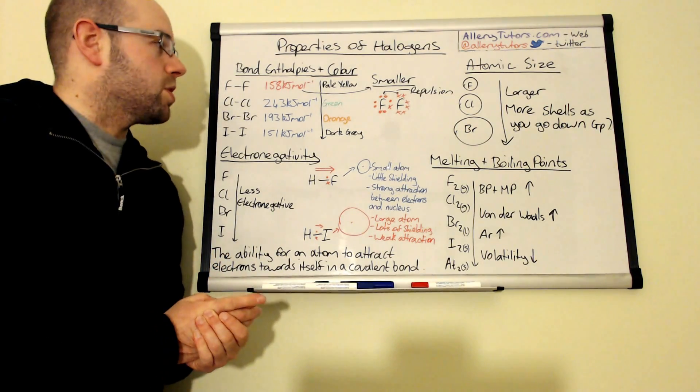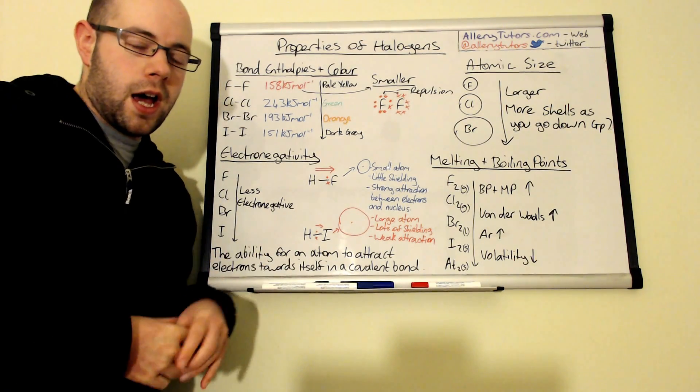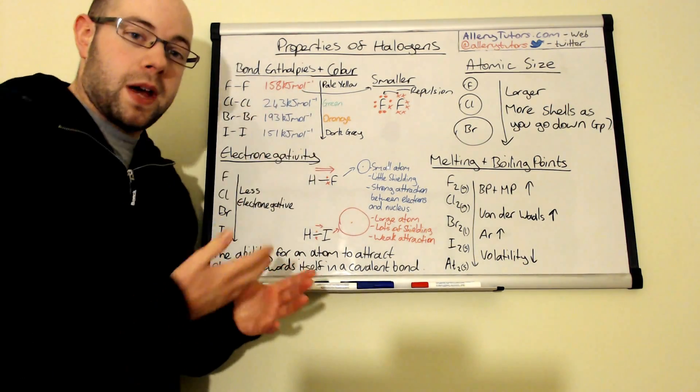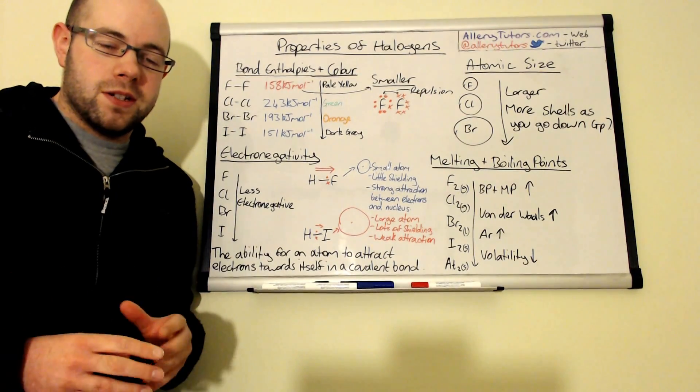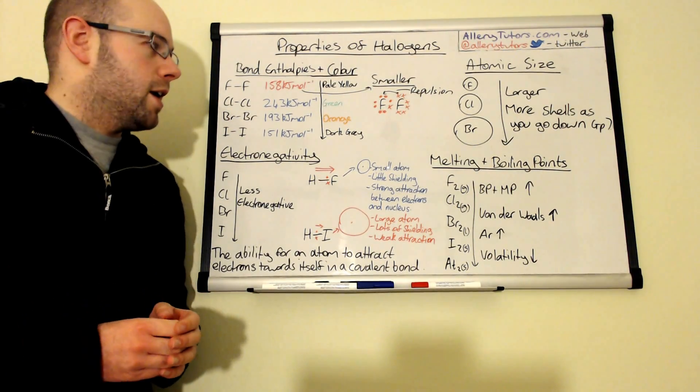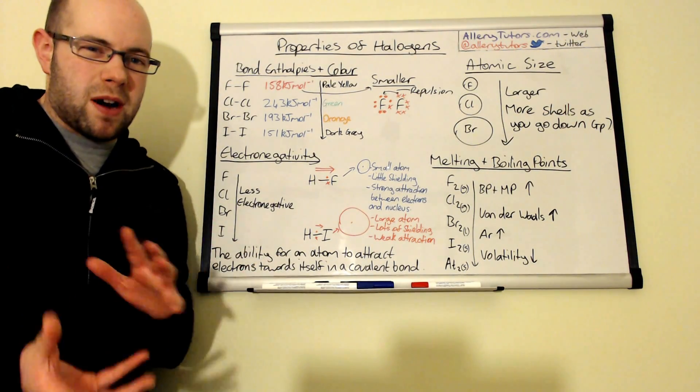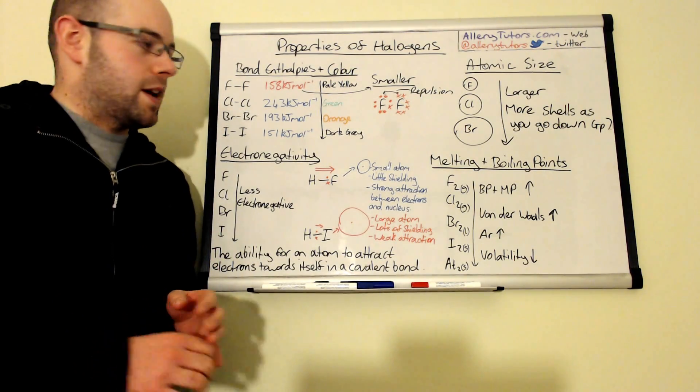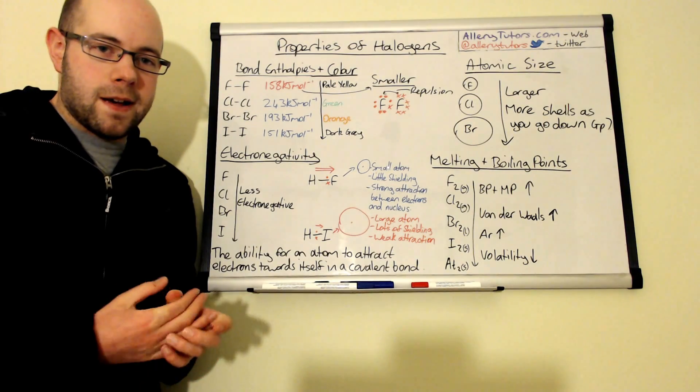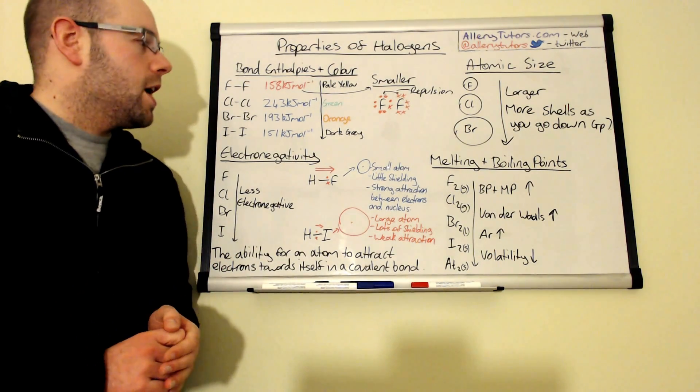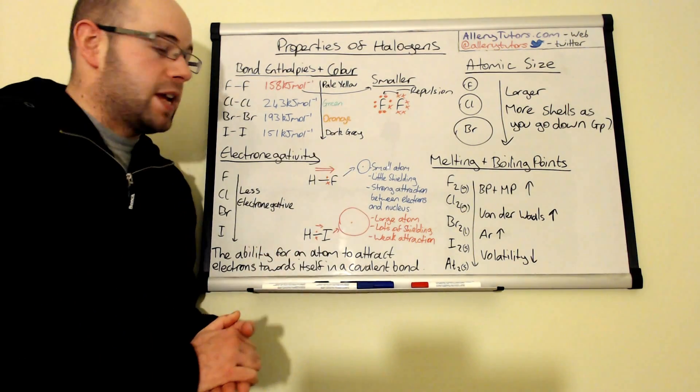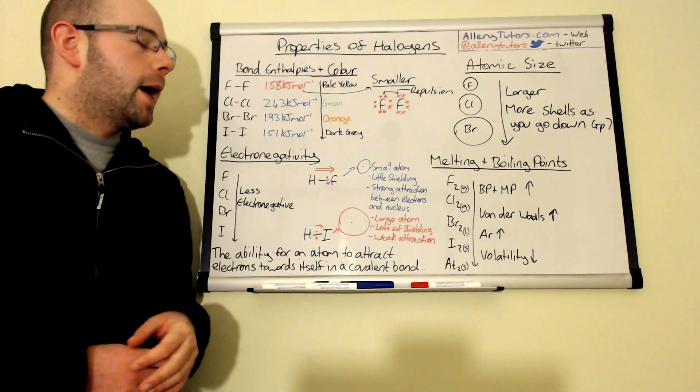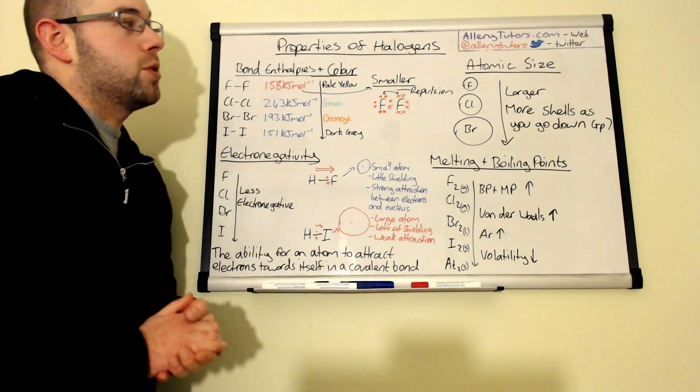In general the colors as we go down the group they get darker. We start with fluorine which is pale yellow, chlorine is a very pale green color, bromine is like a browny orange color, looks a little bit like rust and iodine is a dark grey or almost black solid. So but obviously when you heat that it actually turns purple but just make sure you call it dark grey.